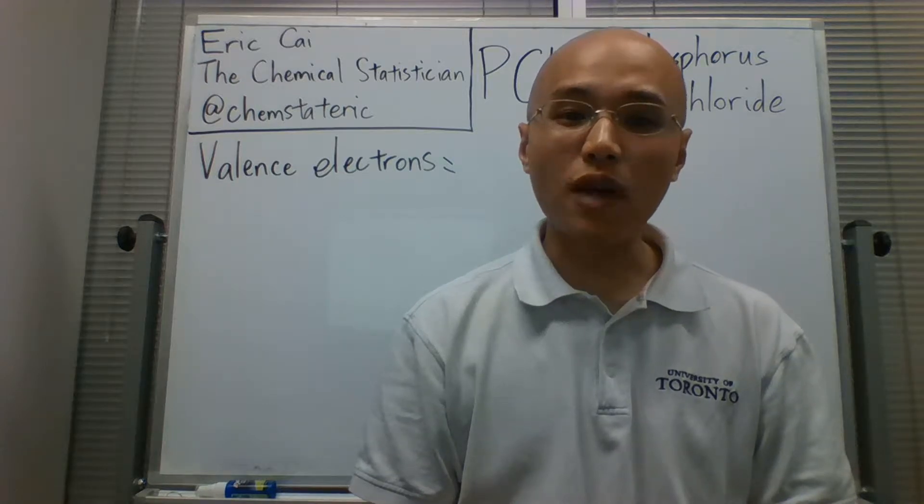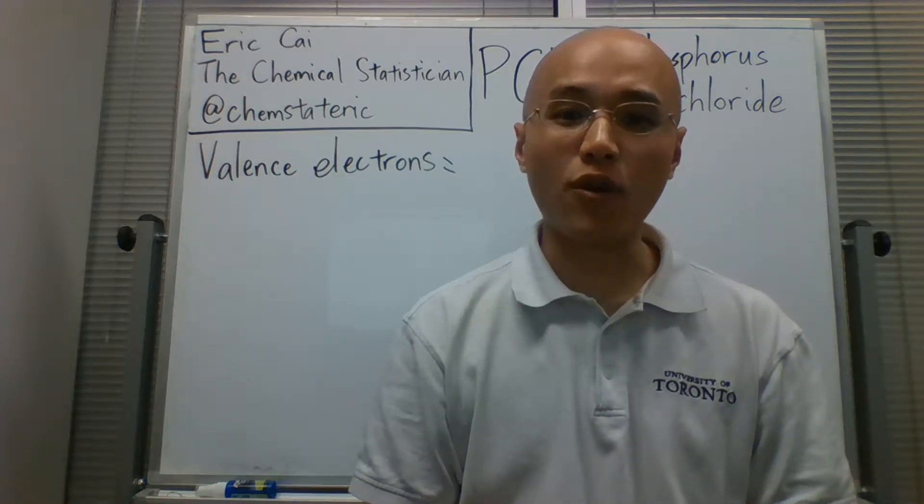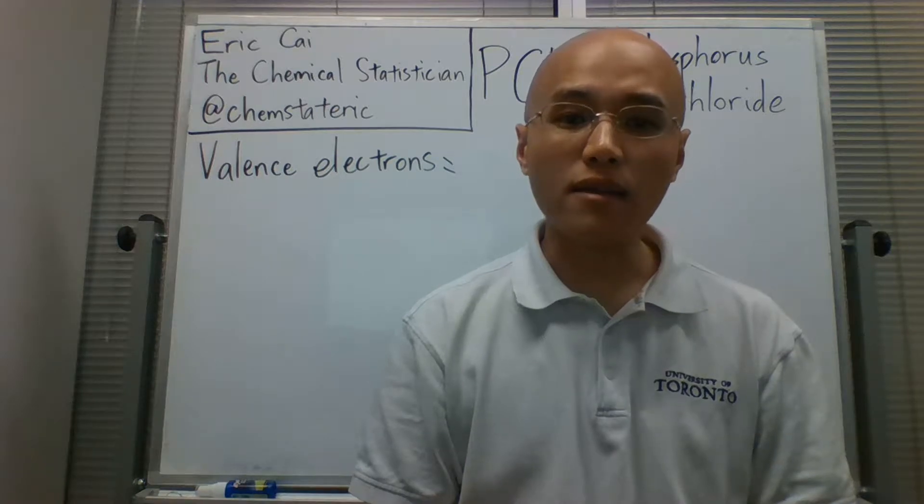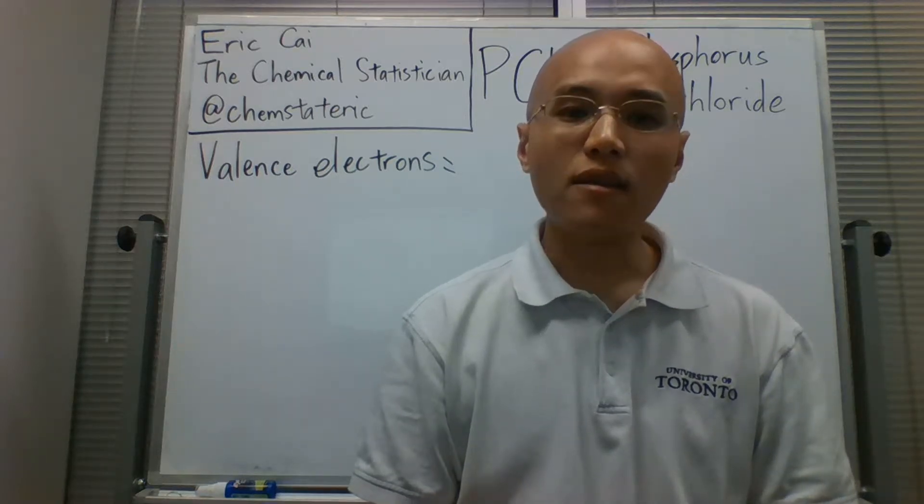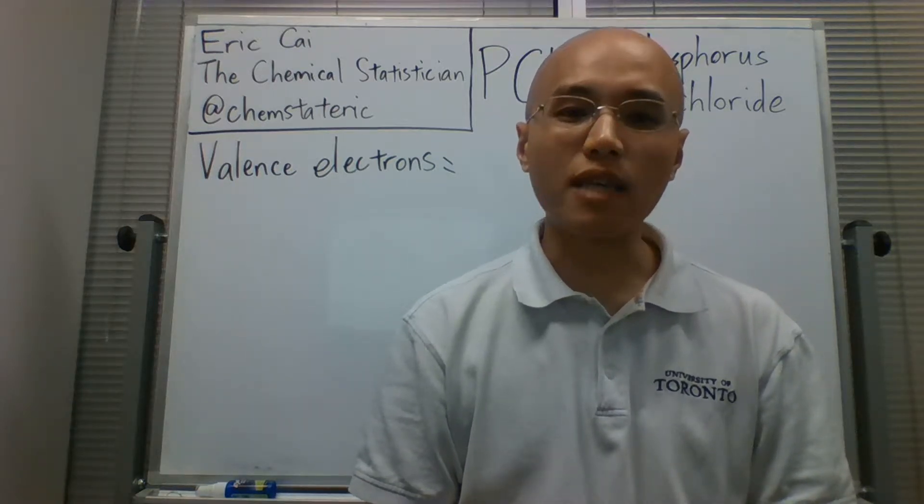In previous videos, I showed how to draw the Lewis structures for carbon dioxide, carbon monoxide, the carbonate ion, boron trifluoride, and tetrafluoroborate.